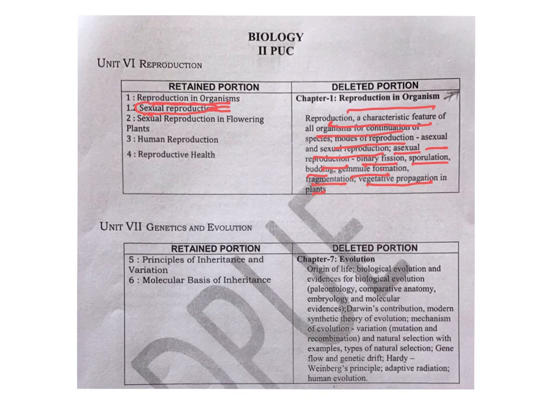The fourth chapter is reproductive health. In that, all portions, means all parts, terms — everything is retained. Nothing is removed or deleted. That is about contraceptive methods, human population in India, sterility and infertility, and how to overcome infertility with the help of artificial reproductive techniques.